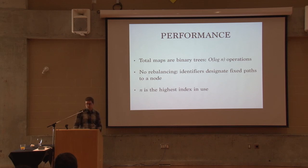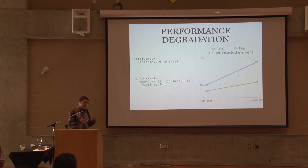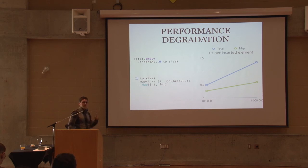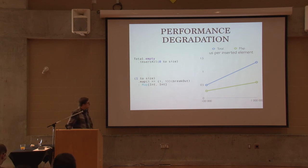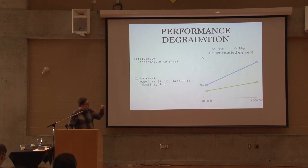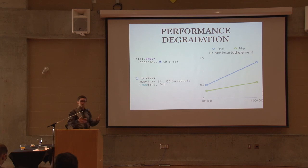I've compared total map to a regular map using an insertAll method that folds and inserts repeatedly, compared to creating a map from a collection of tuples using the breakOut trick. The total map is slower and appears to get slower as we move from 100,000 to 1 million elements, but it's still within a reasonable factor and could probably be optimized. That's all I have for benchmarks — I'll add more in the future, including remove operations.